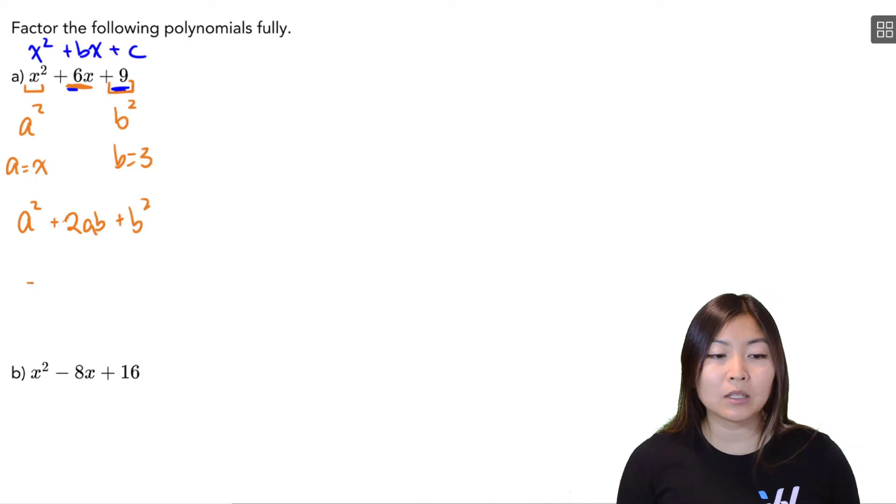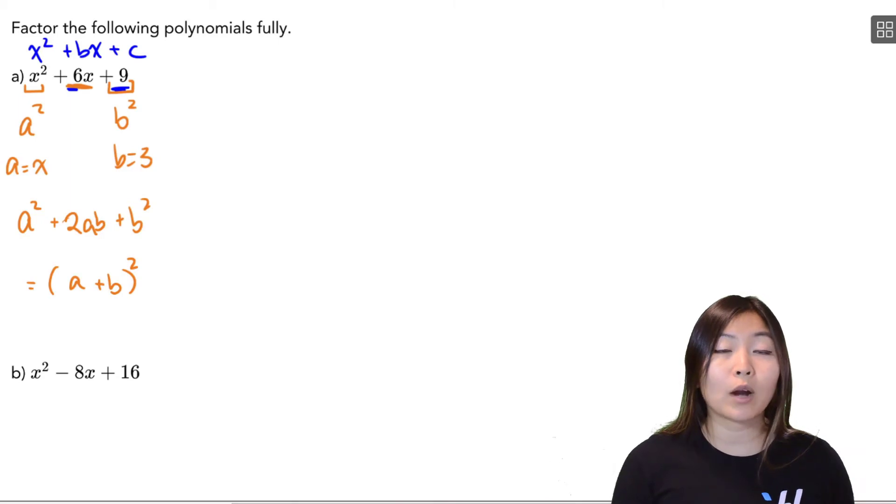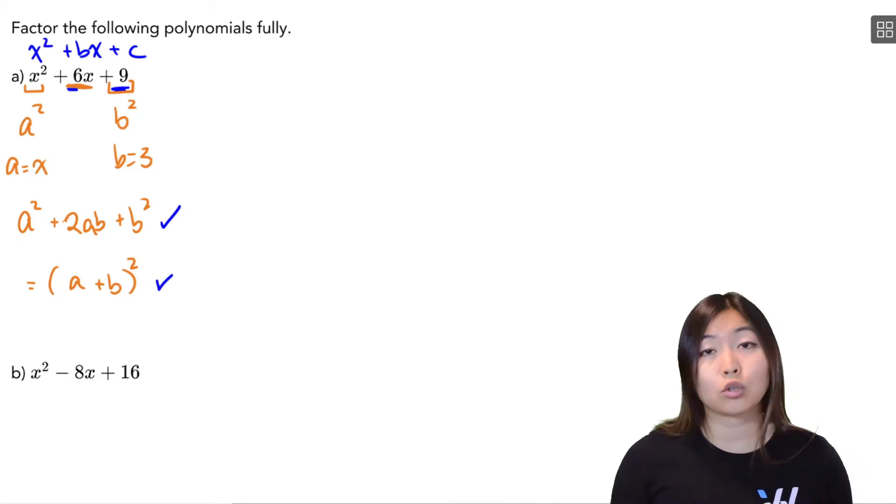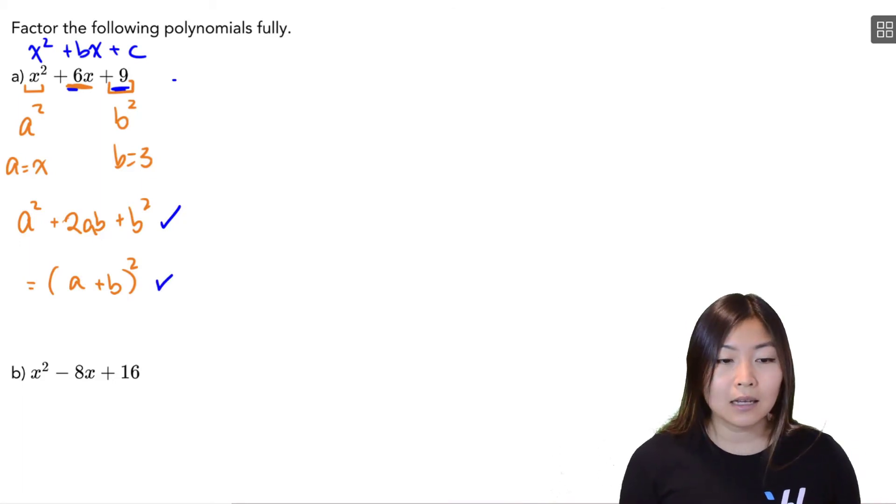a squared plus 2ab plus b squared, and the factored form would just be a plus b all squared. This is a shortcut for factoring trinomials like this. If you're able to recognize that it is a perfect square trinomial, you can just use this shortcut factored form. So in this case, a is x, b is 3, so this is just x plus 3 all squared.